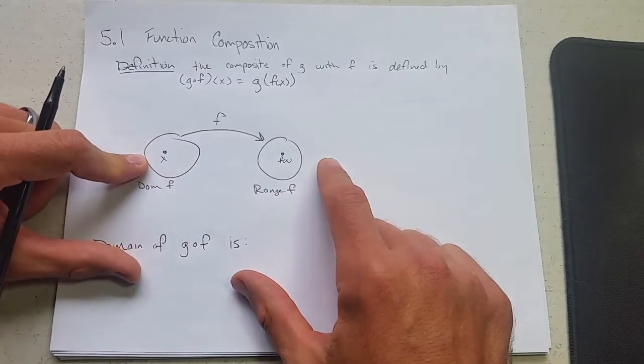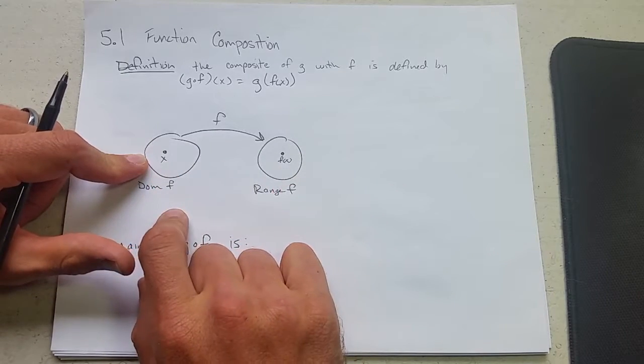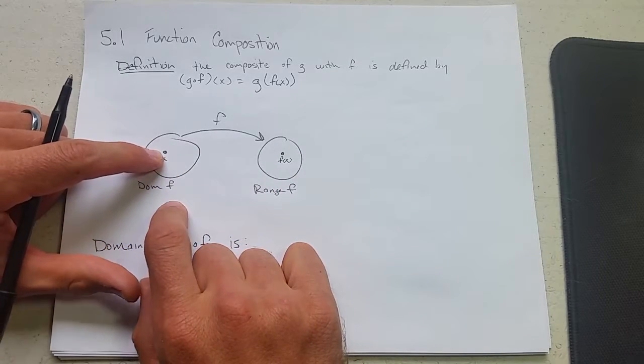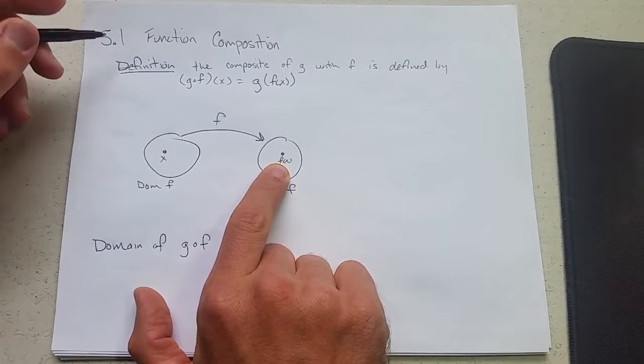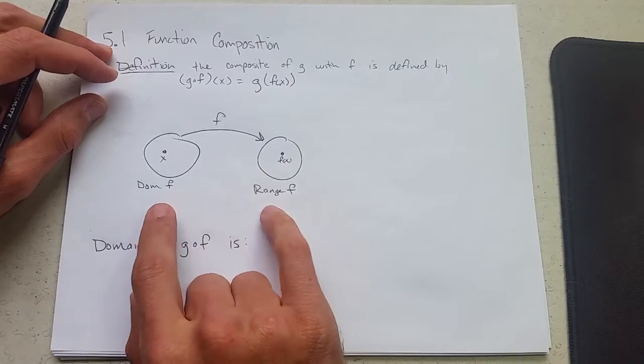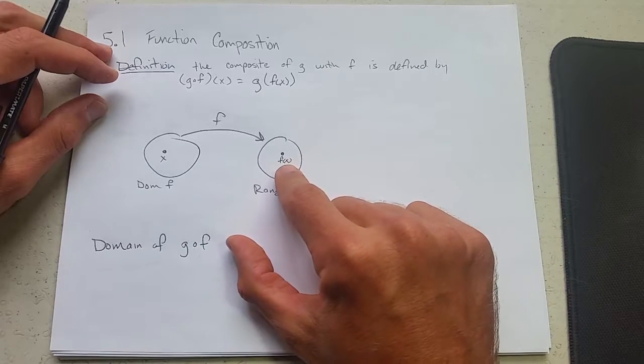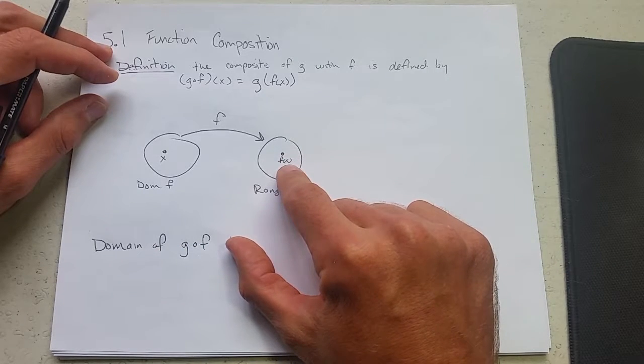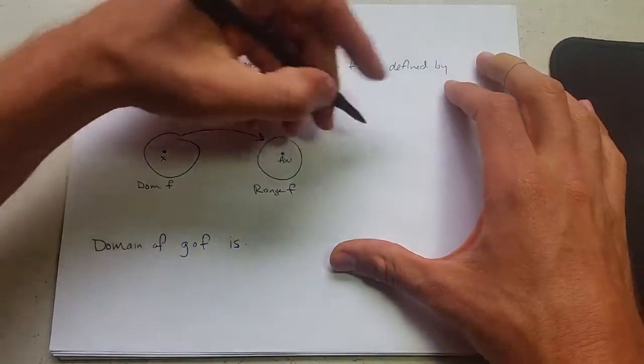Looking at functions as maps going from a domain to a range. So f takes some x value and turns it into a y value or an f of x value. So this is what a function f does. We saw this before, domain and range. Now g, what it's going to do is take this f of x as the input and then bring it over here to the output.